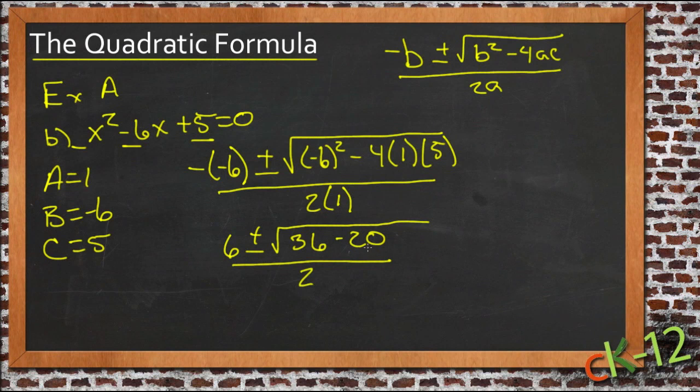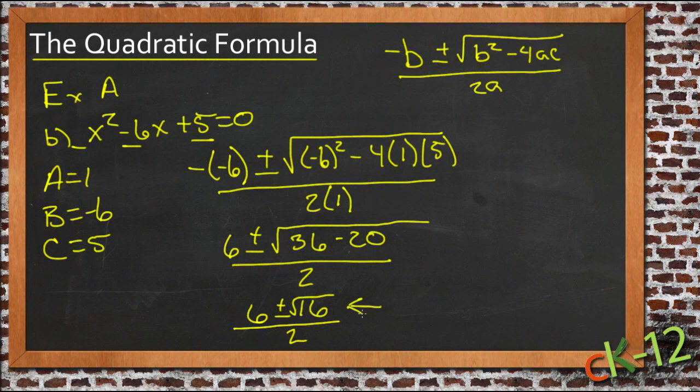So now we have 36 minus 20, that's 16, so we have 6 plus or minus the square root of 16 over 2. And this, by the way, in case it wasn't clear before, this right here is why we have the plus and the minus outside, because as we take the square root of 16, we actually get two answers. We get 4 and negative 4, which is why we have plus and minus right here.